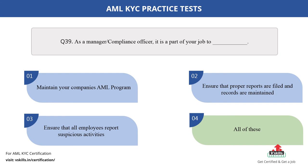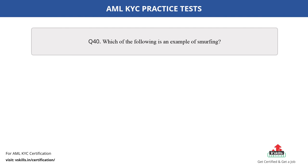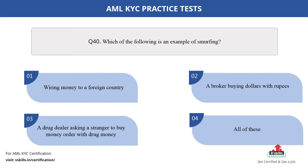Question number 40. Which of the following is an example of smurfing? The options are: A. Wiring money to a foreign country; B. A broker buying dollars with rupees; C. A drug dealer asking a stranger to buy money orders with drug money; D. All of these. The correct answer is option C.